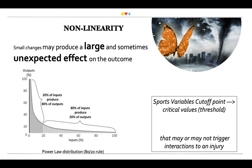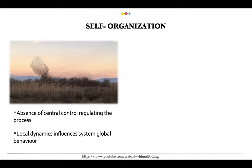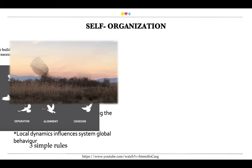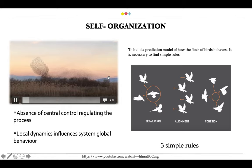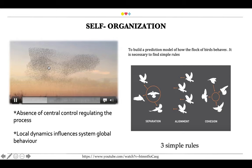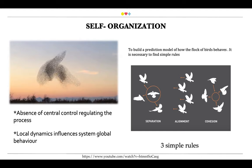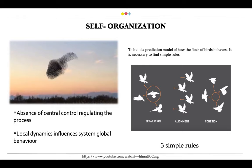We should also try to identify those specific values. Another key point is self-organization. As we can see in this video, flocking of birds shows an absence of central control regulating the process, and local dynamics influence the system's global behavior.